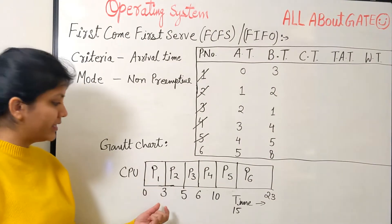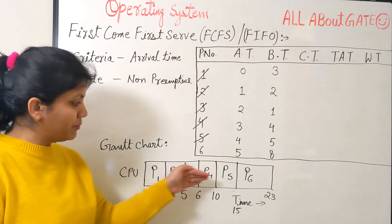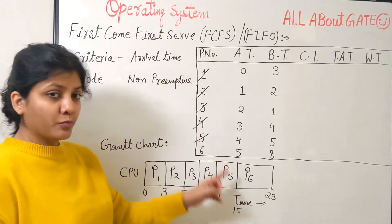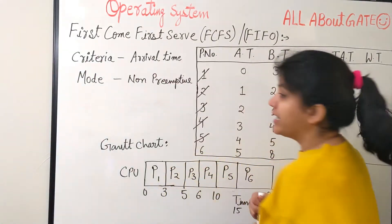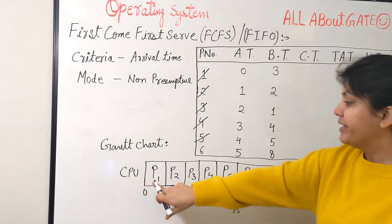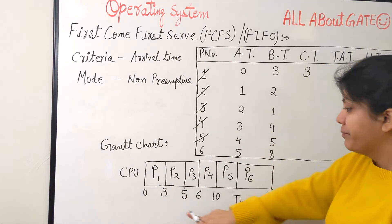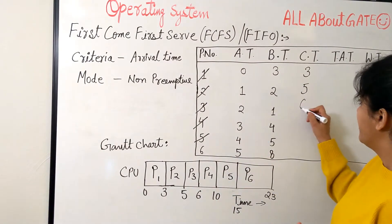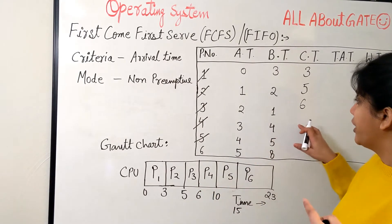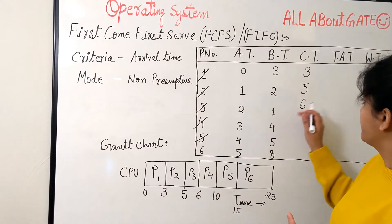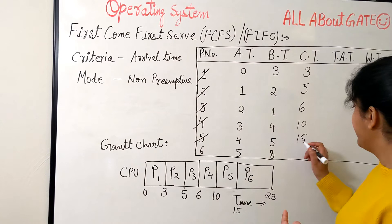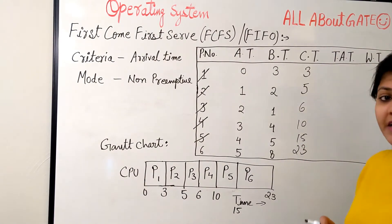The Gantt chart shows: P1 from 0 to 3, P2 from 3 to 5, P3 from 5 to 6, P4 from 6 to 10, P5 from 10 to 15, and P6 from 15 to 23. This shows which process the CPU is allocated to at each point in time. Now that scheduling is done, we find the completion time for each process: P1 = 3, P2 = 5, P3 = 6, P4 = 10, P5 = 15, P6 = 23.